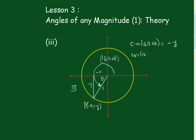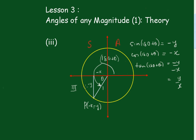The sine of 180 plus Theta is equal to minus Y on 1, or minus Y. The cos of 180 plus Theta is equal to minus X on 1, or minus X. And the tan of 180 plus Theta is minus Y on minus X, which is Y on X. So the tan is the only one positive in the third quadrant.